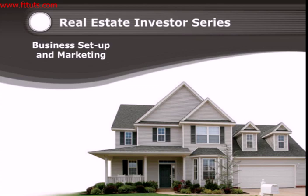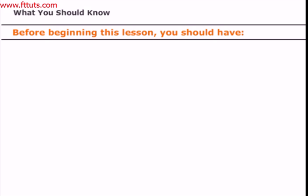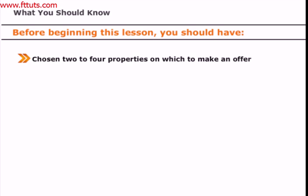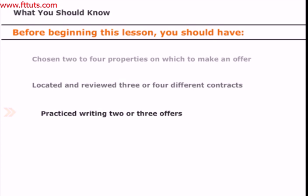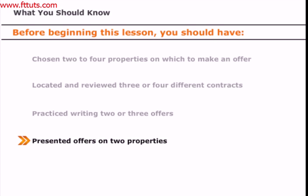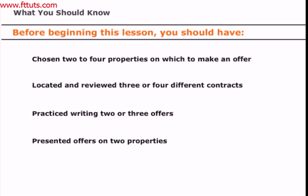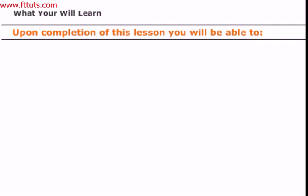Today's lesson covers an essential step in the process of making money: how to set up and market your real estate business. Before beginning this lesson you should have completed the following action items for the contracts and offers lesson: chosen two to four properties on which to make an offer, located and reviewed three to four different purchase contracts, practiced writing two to three contracts, and presented offers on at least two properties.